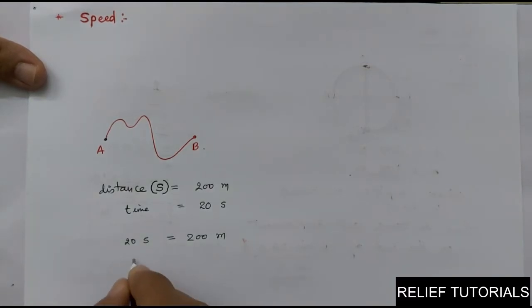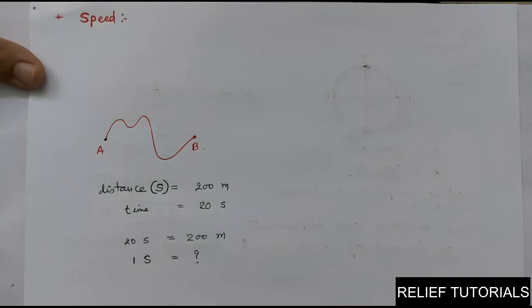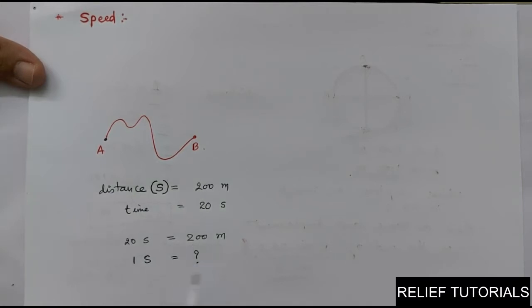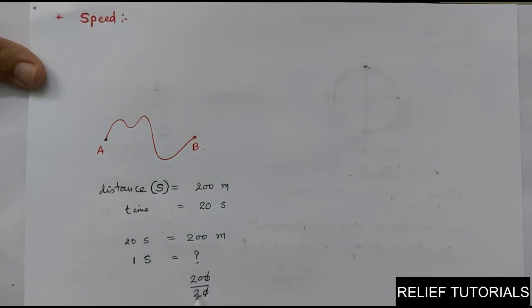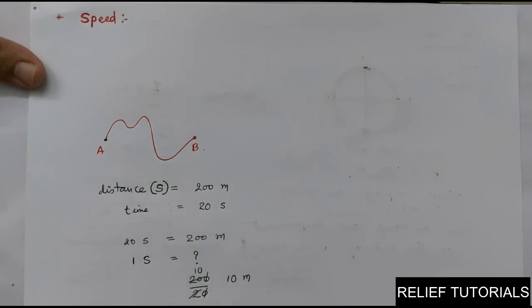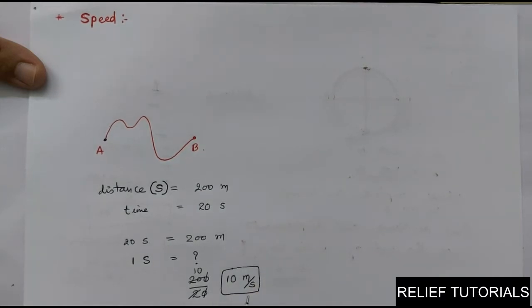In 20 seconds the distance traveled is 200 meters. So what distance is it averagely traveling in one second? It travels 200 divided by 20, which equals 10 meters. So we can say 10 meters per second — that is the distance traveled in one second.